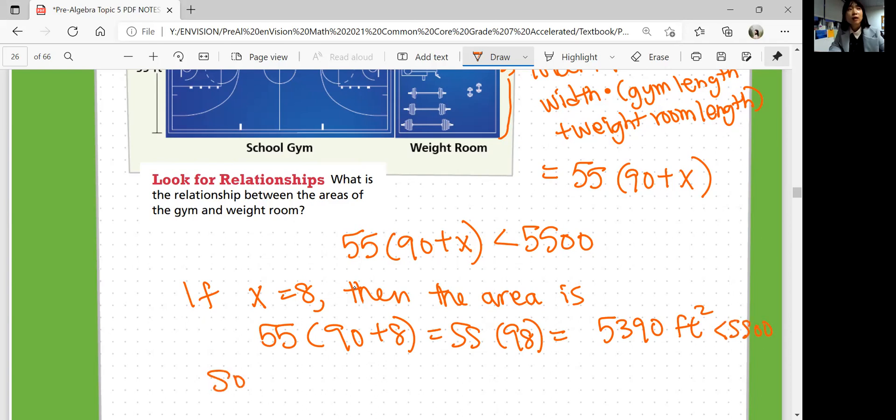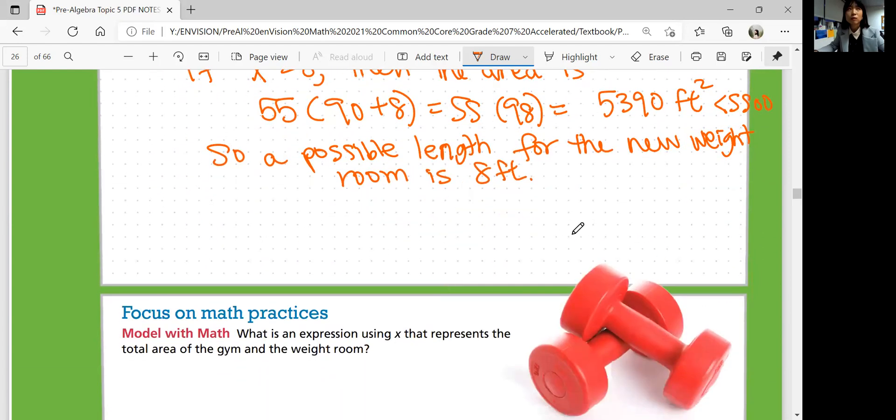So you can say, it doesn't have to be 8, you could plug in 9 and 7 or 5 and see if that works as well. So for the new weight room is 8 feet. This is just one possible length.